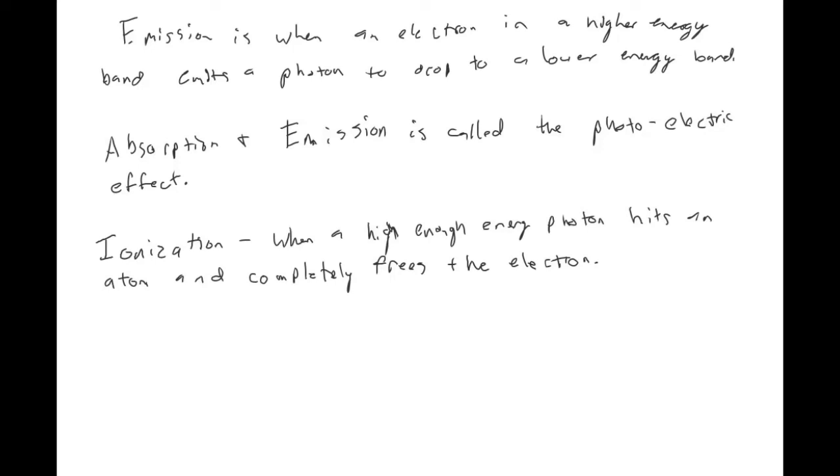Once that electron is freed from the atom, it's going to be moving, and so there's going to be some kinetic energy associated with that electron. It's going to be equal to the energy of the incoming photon minus Be, which is the binding energy. This is kinetic energy of the electron.